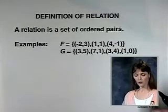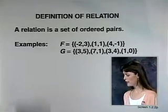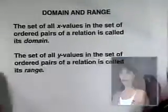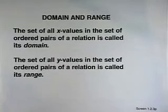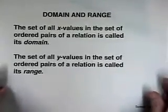Now, what we are doing is looking at two different sets for which we can look at their domains and ranges. The domain of a set is the set of all x values in the set of ordered pairs of a relation. The range, the set of all y values in the set of ordered pairs of a relation, is called its range.